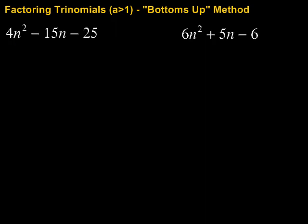Let's take a look at a couple more quick examples here. So again, we start by looking to see if there's any common factor that I can pull out. Well, it doesn't look like it. So then I hop into my bottoms up method, starting again by taking A times C.